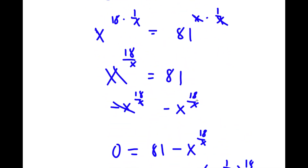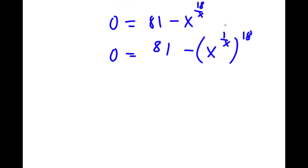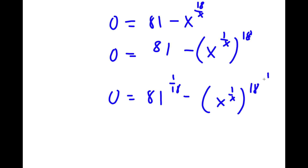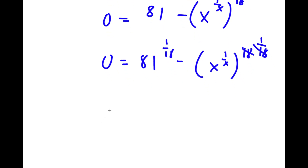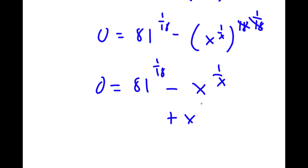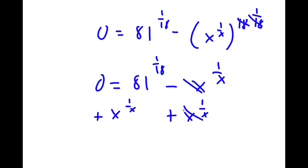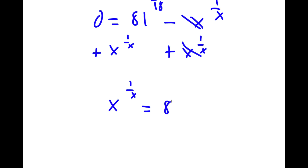Now if I take the power of 1 over 18 on both sides, I get 0 is equal to 81 to the power of 1 over 18, minus x to the power of 1 over x to the power of 18, to the power of 1 over 18. These two cancel out, and I get 0 is equal to 81 to the power of 1 over 18 minus x to the power of 1 over x. So if I add x to the power of 1 over x on both sides, I get x to the power of 1 over x is equal to 81 to the power of 1 over 18.